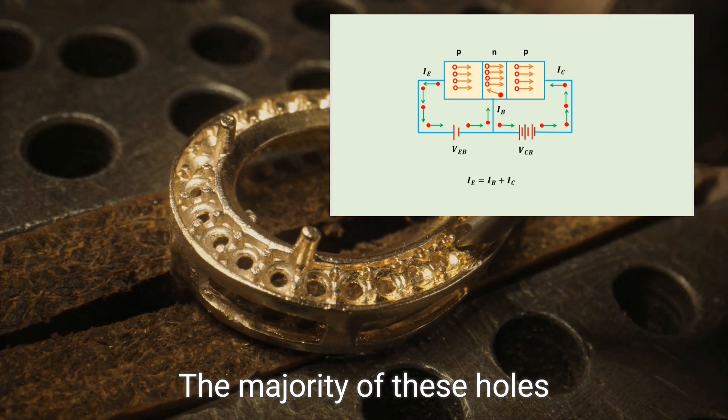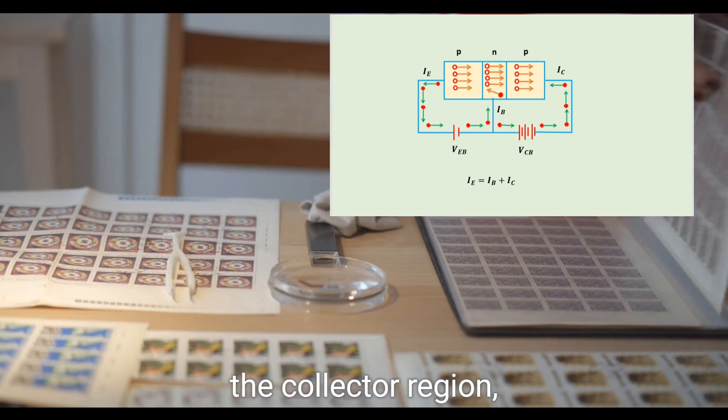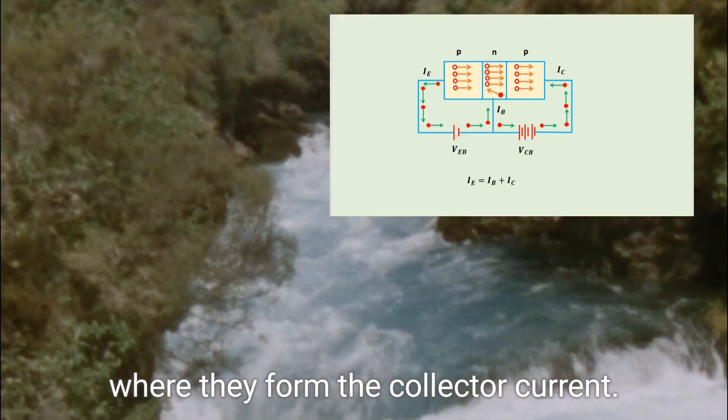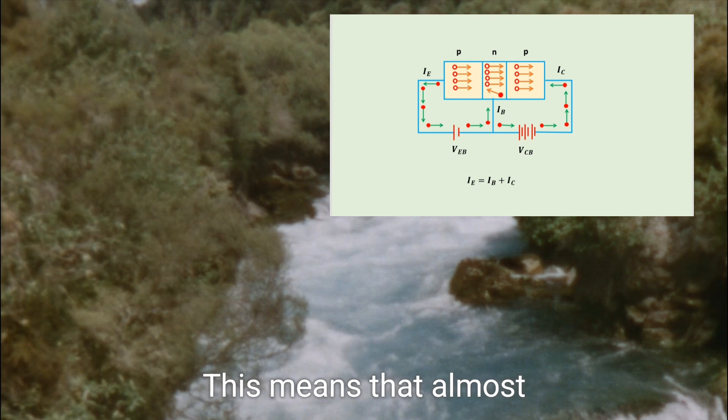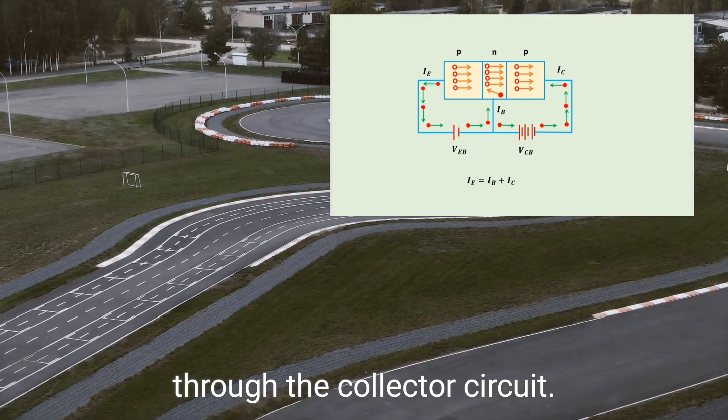The majority of these holes, more than 95%, continue to cross into the collector region, where they form the collector current. This means that almost the entire emitter current flows through the collector circuit.